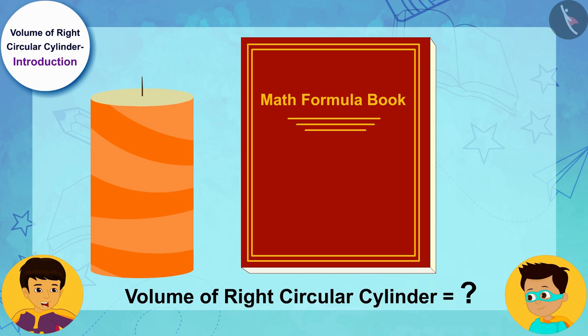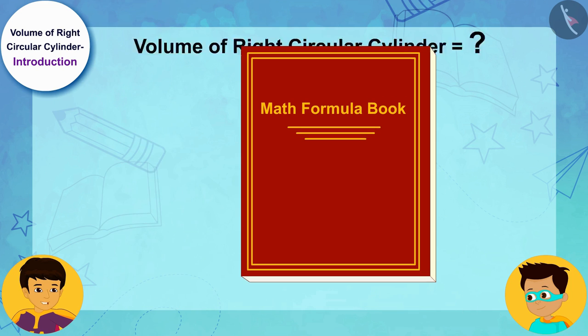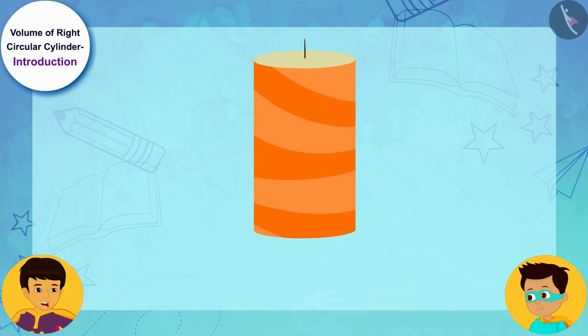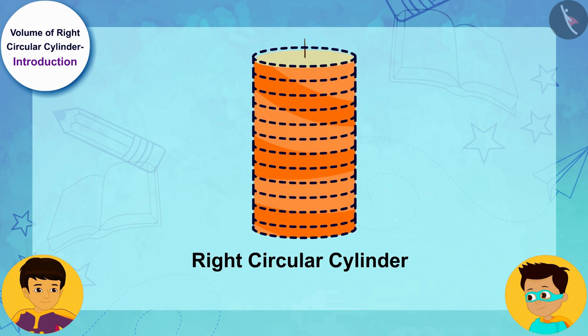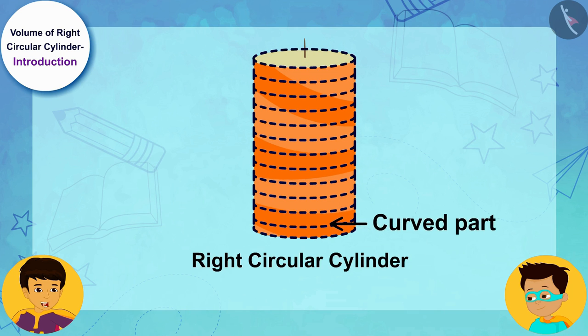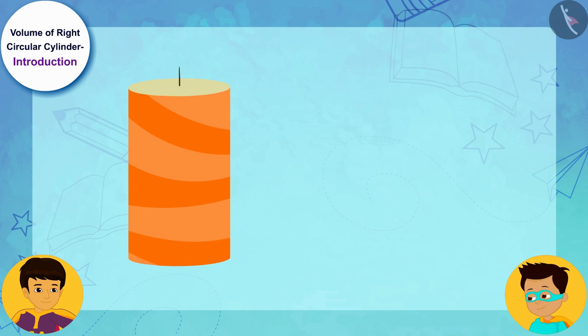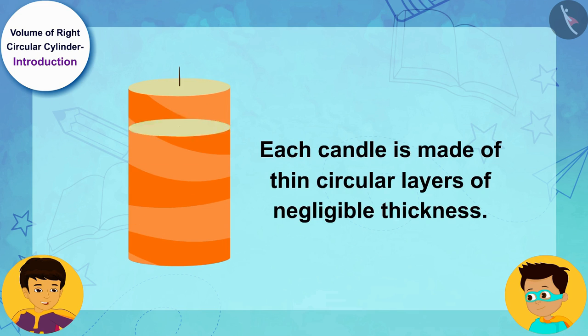Each candle is a right circular cylinder because its curved part is perpendicular to its base. Imagine that each candle is made of thin circular layers of negligible thickness, and the radius of each circular layer is r.